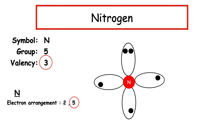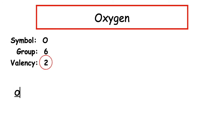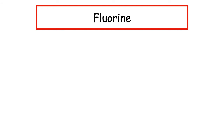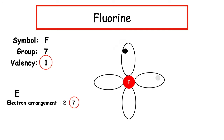Remember the electrons have to sit in single seats before they double up. Oxygen is found in Group 6 and has a valency of 2. The electron arrangement is 2, 6, and the outermost occupied energy level is the second, so we draw a petal diagram and put in those six outer electrons — they sit singly before they double up. Fluorine has the chemical symbol F, found in Group 7 with a valency of 1. The electron arrangement is 2, 7. We draw a petal for the second energy level, pop in the seven outer electrons sitting singly before doubling up.